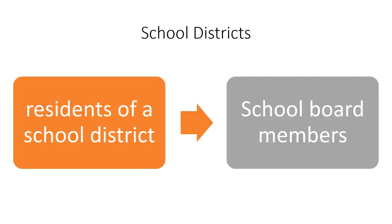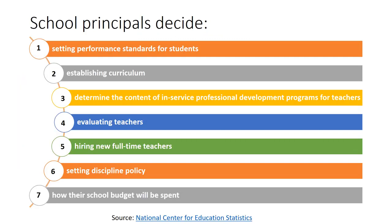At the district level, school board members make decisions on behalf of their constituents. When you cast a ballot in your local school board elections, you participate in a group decision-making process to decide who can make decisions on your behalf. At the school level, school principals decide primarily in seven areas, according to data from the National Center for Education Statistics. At all levels of governance in education, decision-making power is endowed to those in leadership positions. Whether a leader shares that decision-making power is another topic.